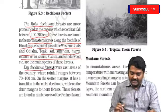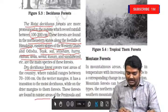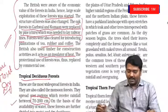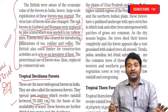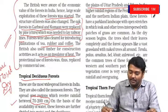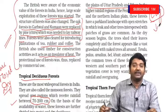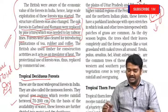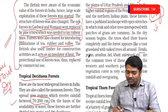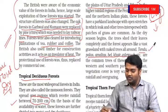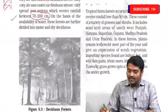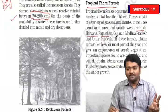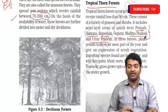Dry deciduous forests are present in the rainier parts of the peninsula and the plains of UP and Bihar. In winter, the Gangetic plains do not receive rainfall — this is the region where you usually observe dry deciduous forests. Tendu, Palas, Amaltas, Bel, Khair, and Axlewood are trees grown in this area. Tropical thorn forests are found in Punjab, Haryana, the northwestern side, Rajasthan, Gujarat, Madhya Pradesh, and Uttar Pradesh.